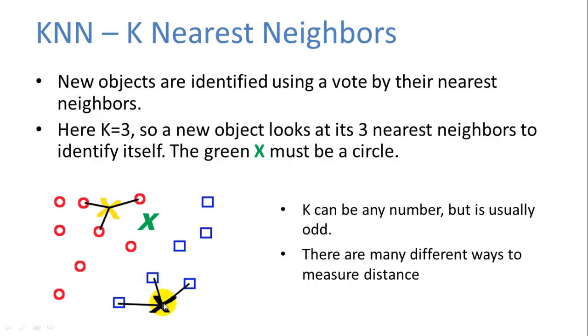And in this case, we have a black X. And the three nearest identified objects are blue squares. So we can assume that X is also a blue square. And in this case, you can see that K equals three. Because we're looking at the three nearest neighbors. Now we can adjust K to different values. Usually it's an odd number, but it can be any value. Whatever gives you the best result.